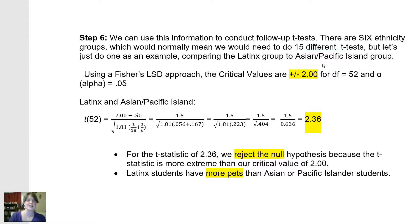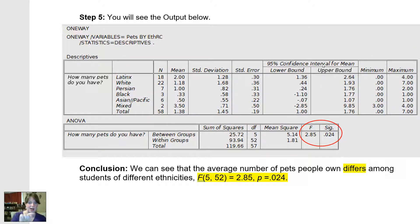These students self-identified. And I find, if I look up at my output here, I see that Latinx students have on average two pets. There were 18 Latinx students and they had on average two pets. The Asian or Pacific Islander students, there were six of them, had on average half a pet. So when I combined all the different pets together, they had on average half a pet.